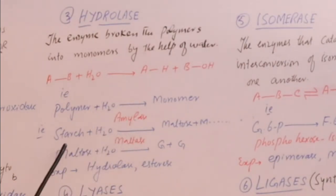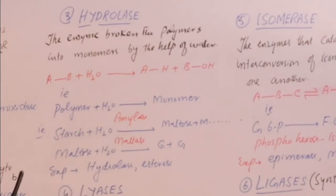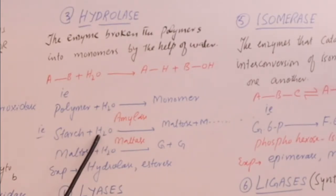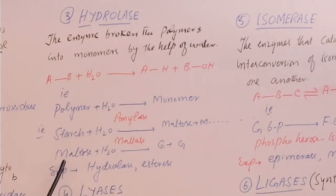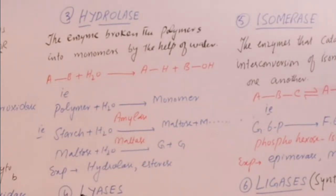For example, starch is a polymer. When water is added, amylase enzyme breaks starch into multiple maltose molecules. Maltose is then a substrate that is further broken down by maltase enzyme (with water) into two glucose molecules. Other examples include lipases and esterases.